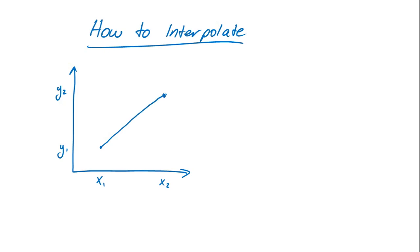If we assume that the variable varies linearly between the two tabulated points, then we can calculate the slope of that line. The slope is given by y2 minus y1 over x2 minus x1. If we're then given some value x that is between our two tabulated values of x1 and x2, we want to know what is the corresponding value of y.